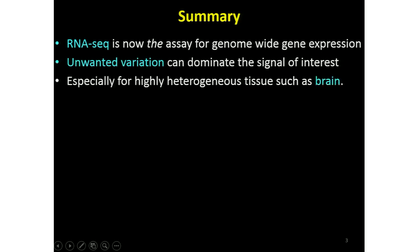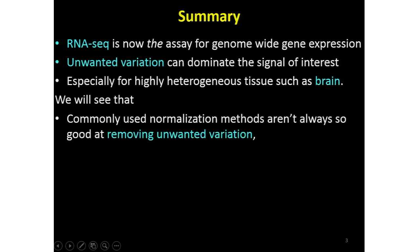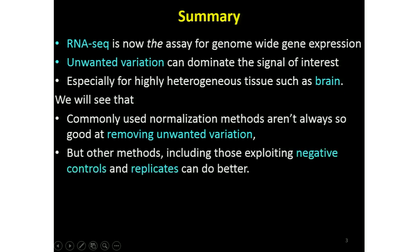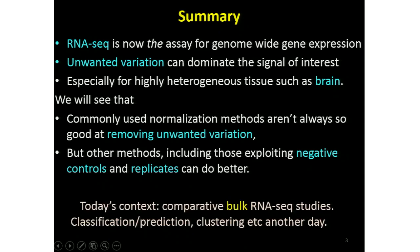I'm going to mainly illustrate today with tissue from brains, mainly mouse brains, but some others. And what I'll show you is that commonly used normalisations don't actually deal with the issue very well, and that other methods, including the one that we are promoting, do better. And I want to emphasise, this is bulk RNA-seq, and I'm going to focus on differential expression or differential abundance.